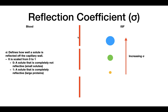In other words, the reflection coefficient defines how well a solute is reflected off the capillary wall, and it is a scaling factor that goes from zero to one. If sigma is zero, this indicates that the solute is completely non-reflective, so it can pass through the capillary wall rather easily — these tend to be small solutes. A reflection coefficient of one indicates a solute that is completely reflective — it cannot pass through the gap junctions and just reflects right off the capillary wall — and these tend to be large proteins.